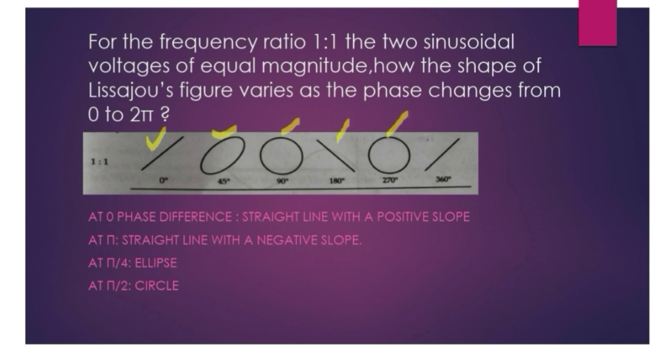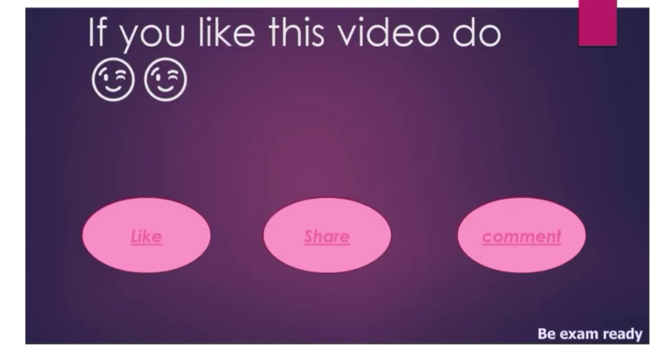And at 270 degrees, we get a straight line with a positive slope. And at 315 degrees, we get an ellipse.